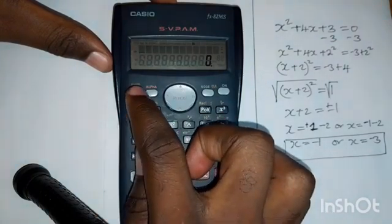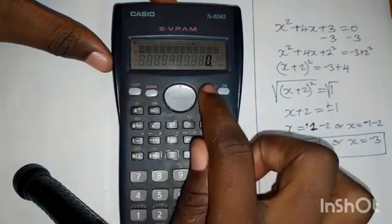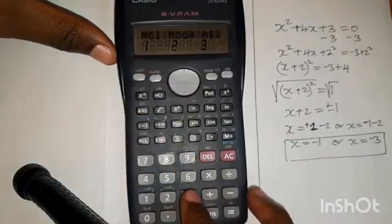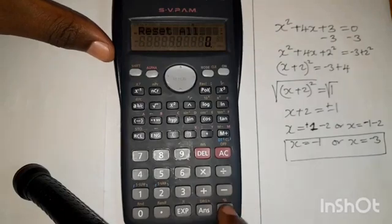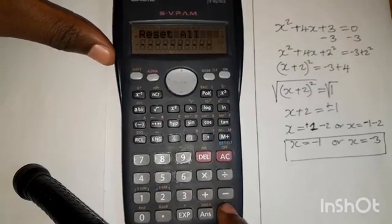So first of all, press shift, then mode, then click three. After pressing three, then click equal sign twice, one, two.